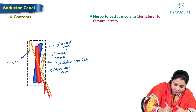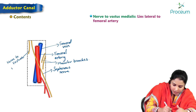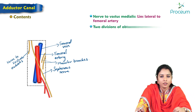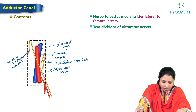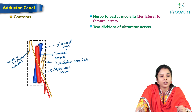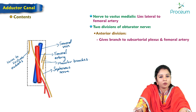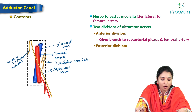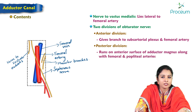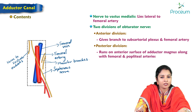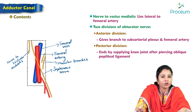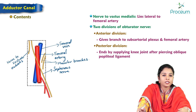The nerve to vastus medialis is also present. Two divisions of the obturator nerve are seen — anterior and posterior. The anterior division gives off a branch to form the subsartorial plexus, running along with the femoral artery. The posterior division runs on the anterior surface of adductor magnus along with the femoral and popliteal arteries, ending by supplying the knee joint after piercing the oblique popliteal ligament.